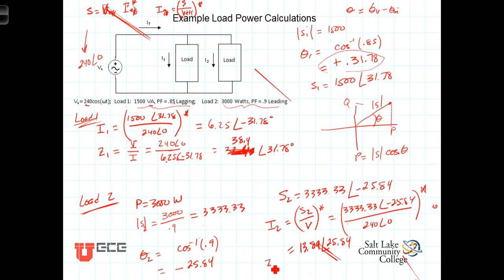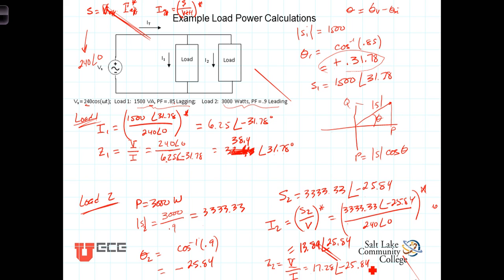Let's go ahead and calculate impedance Z2. Z2 equals V divided by I2, which is 240 angle 0 divided by 13.89 angle 25.84, which gives us Z2 equals 17.28 angle negative 25.84. Once again, we see that the angle of the impedance is the power factor angle.